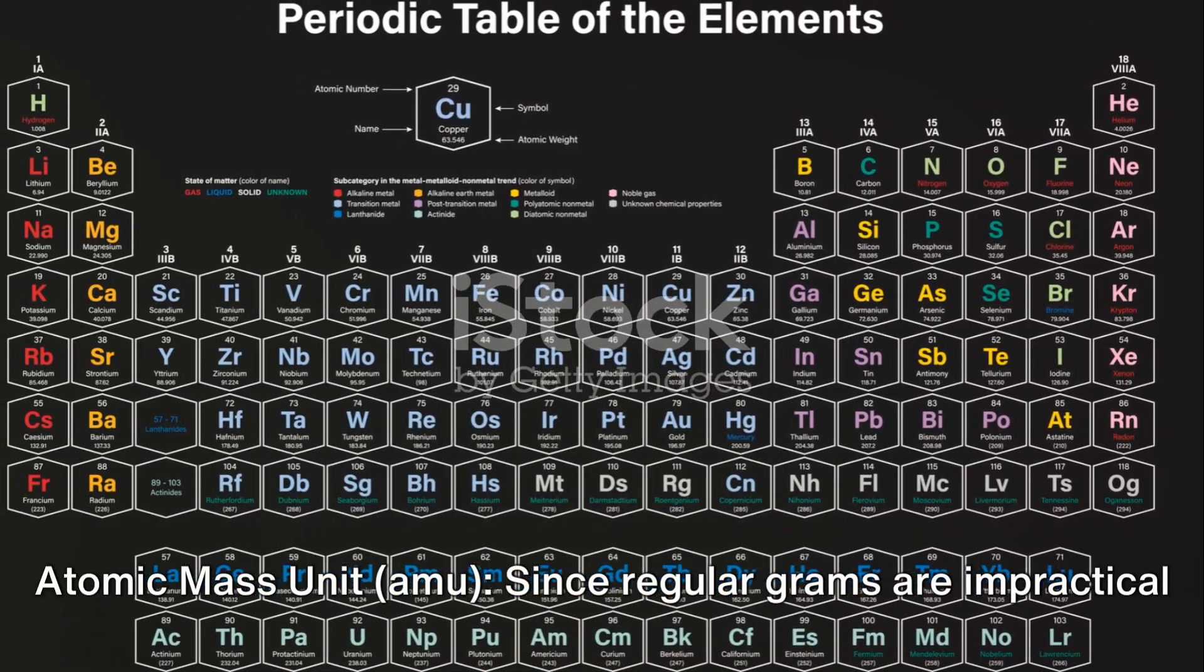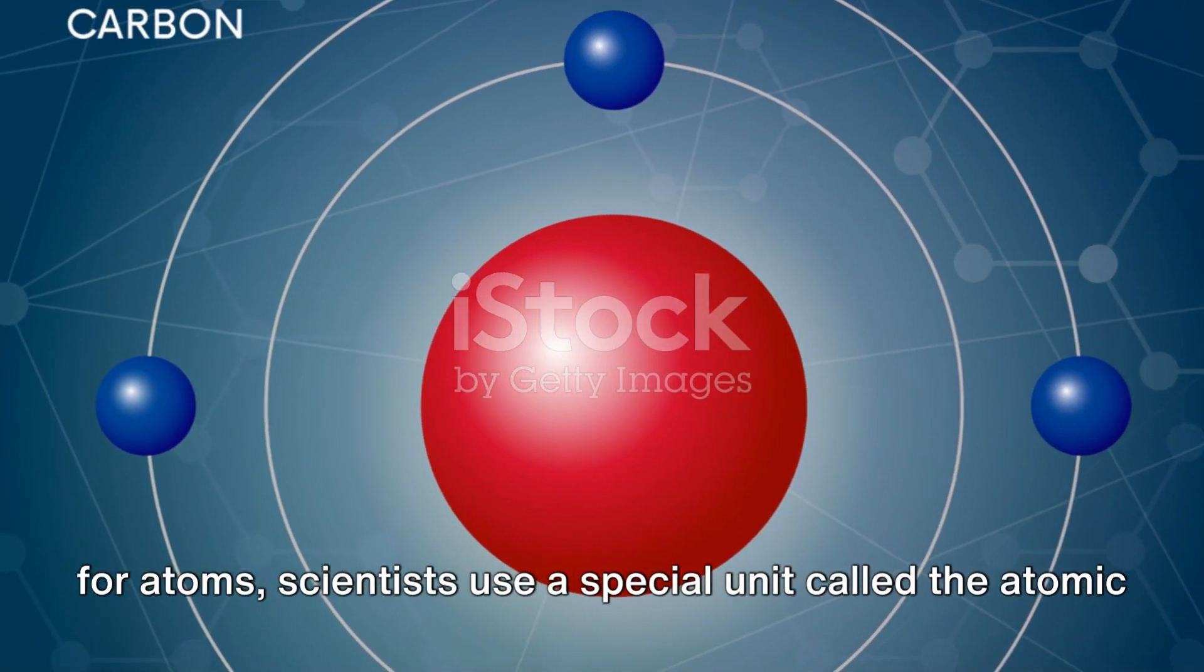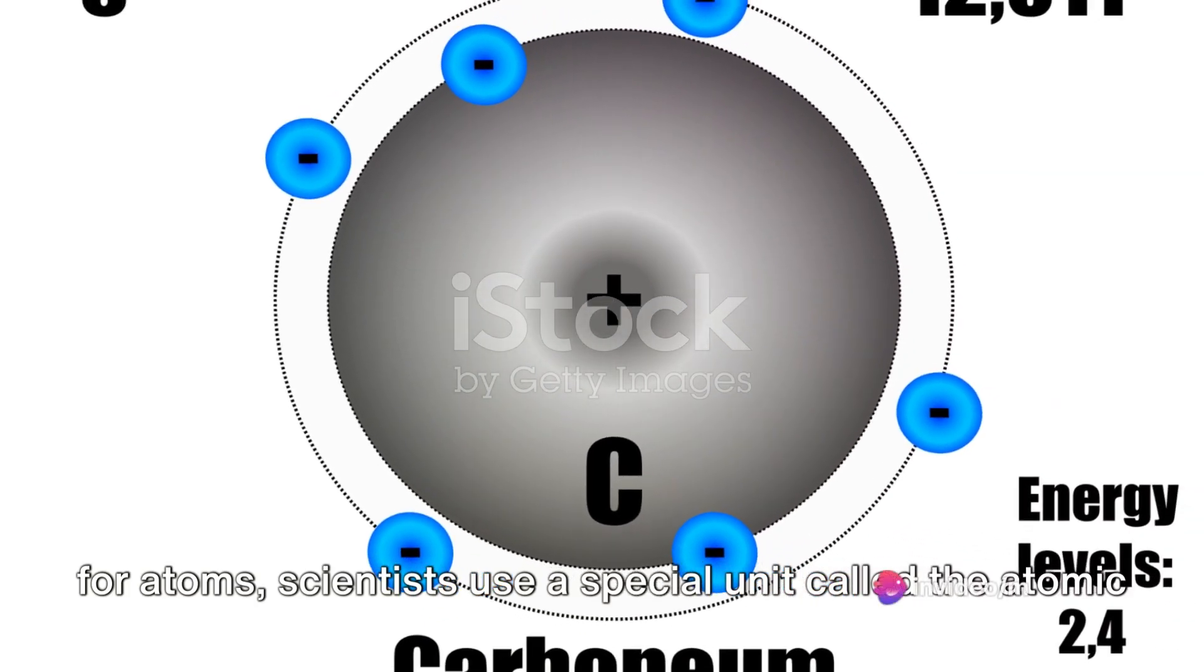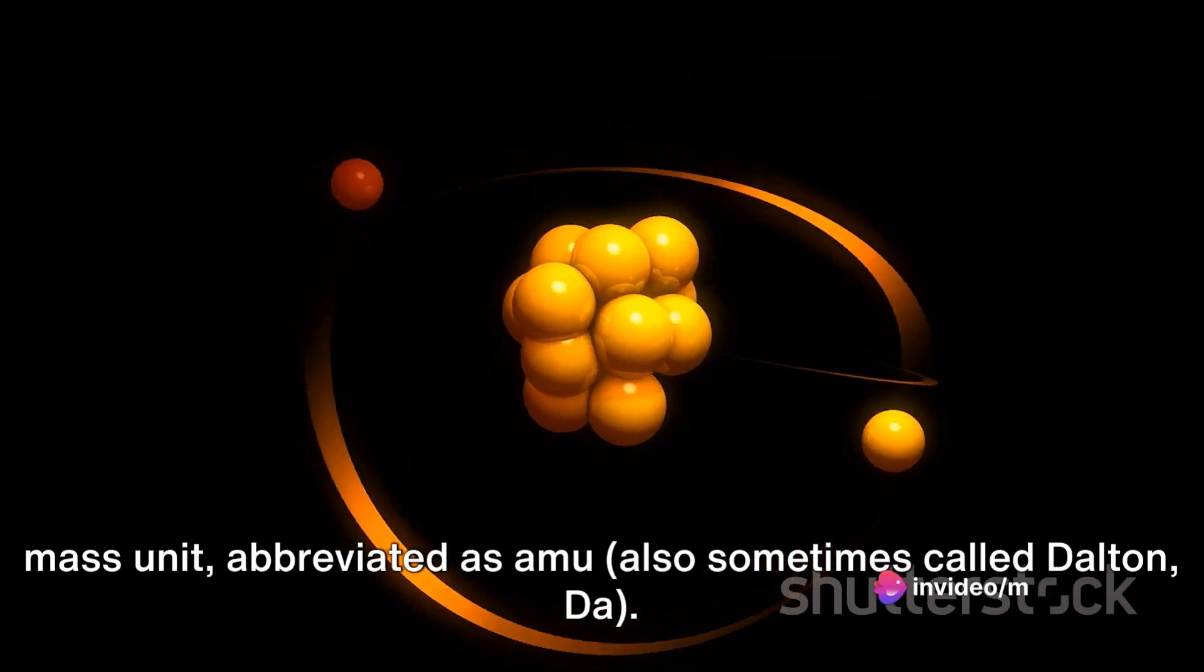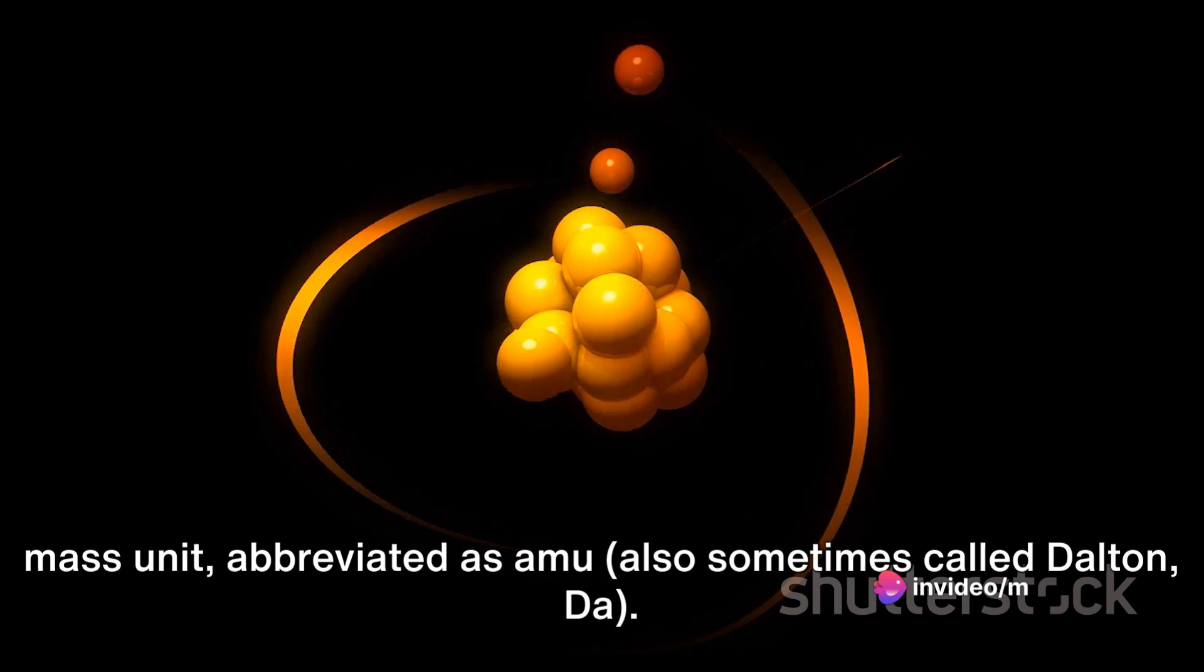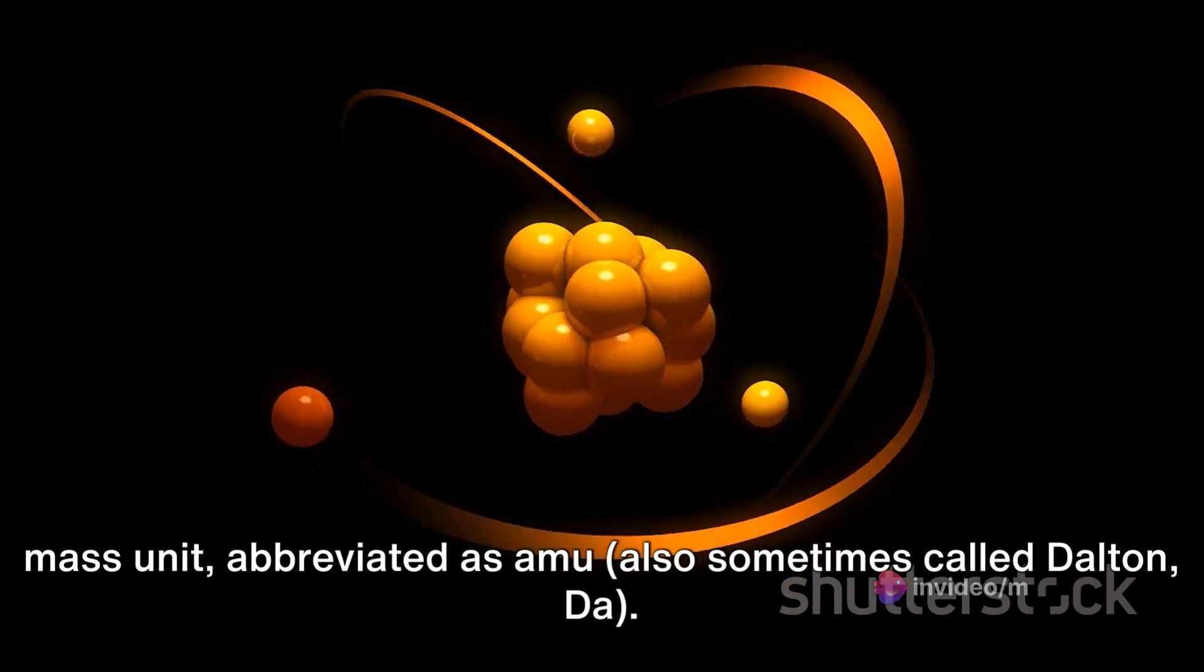Atomic mass unit, amu. Since regular grams are impractical for atoms, scientists use a special unit called the atomic mass unit, abbreviated as amu, also sometimes called Dalton.